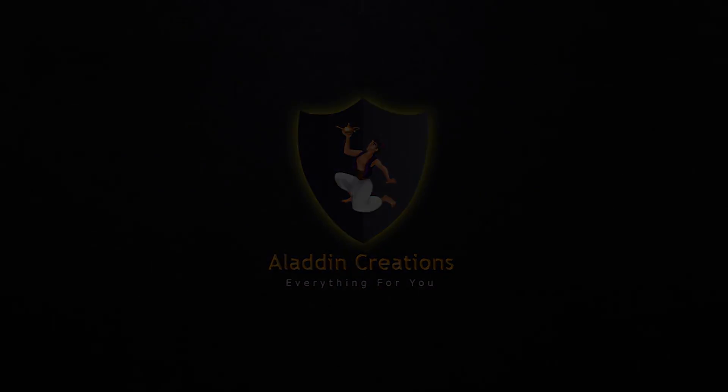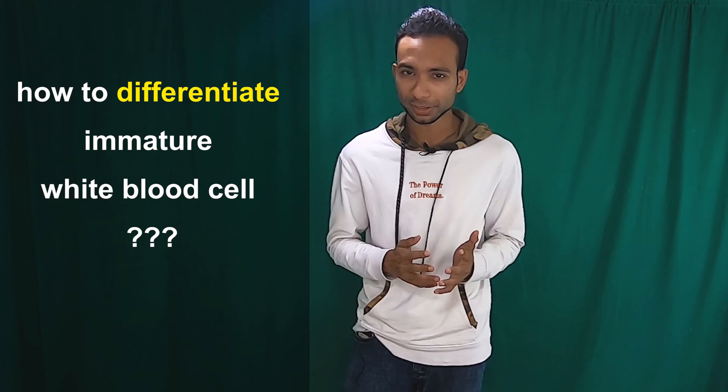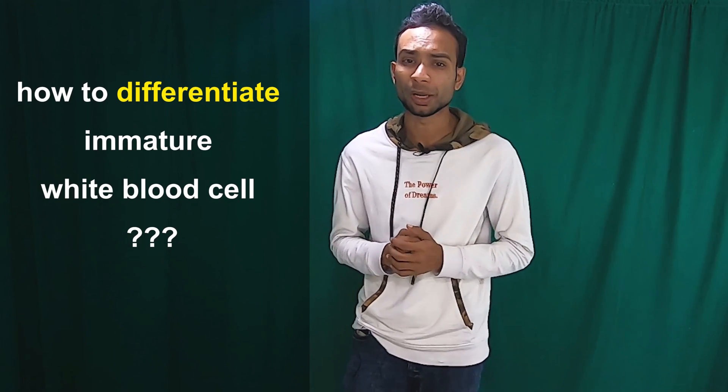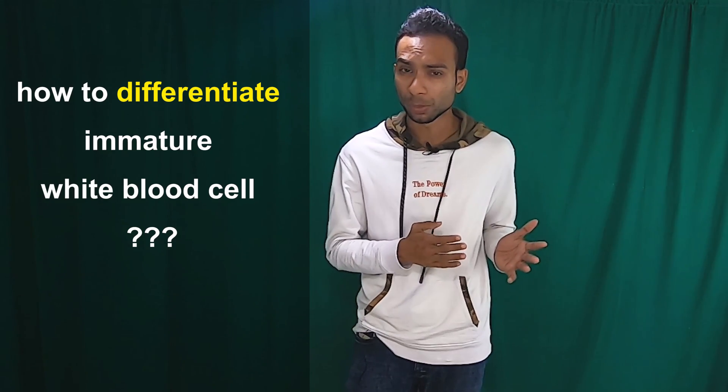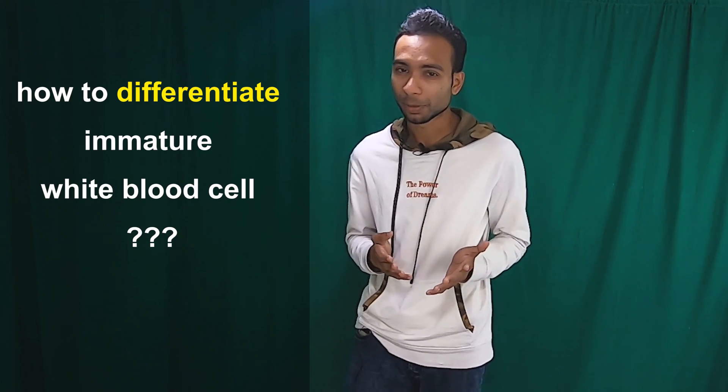Aladdin Creations. Hello friends, welcome to another video of Aladdin Creations. My name is Kawindu. In this video I am going to discuss another important hematology topic: how to differentiate and identify immature myeloid cells such as myeloblast, promyelocyte, myelocyte, metamyelocyte, band neutrophils, or stab form cells.